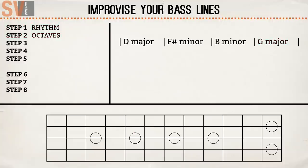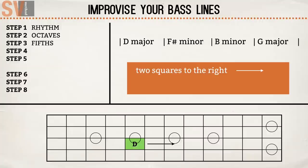The next step would be using fifths. From this point on it slightly starts getting theoretical because there are different fifths, and which one you use depends on the chords being played. But the perfect fifth is located in major and minor chords — that's the majority of chords — so most of the time the perfect fifth is usable. You can find the fifth of any note on the bass guitar by sliding two squares to the right in the direction of the body and one string upwards.